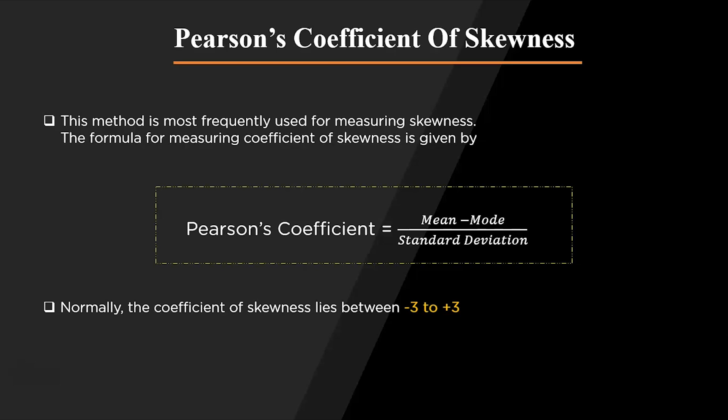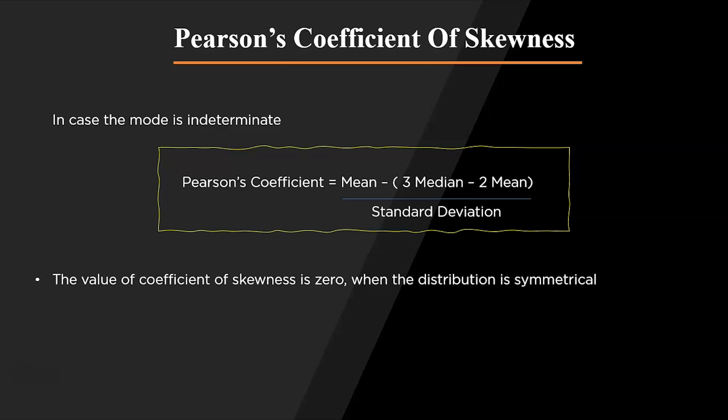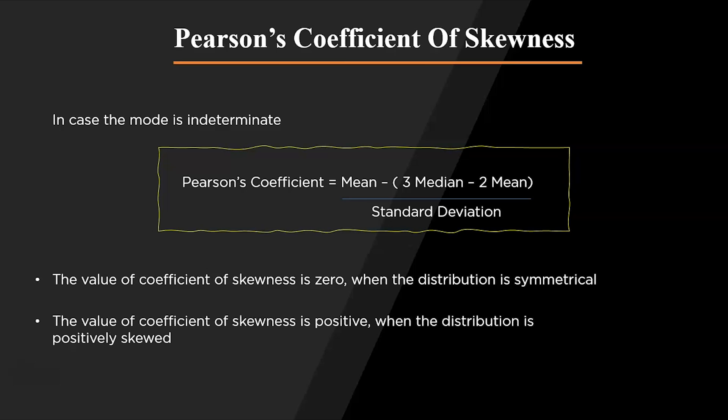This scales the values down to a range of minus 3 to plus 3. In cases where the mode is indeterminate, we can calculate Pearson's coefficient as: mean minus 3 times median minus 2 times mean, divided by the standard deviation. If the coefficient value is between minus 0.5 and 0.5, the distribution is symmetrical. If the value is 0, the distribution is symmetrical. If the value is positive, the distribution is positively skewed.